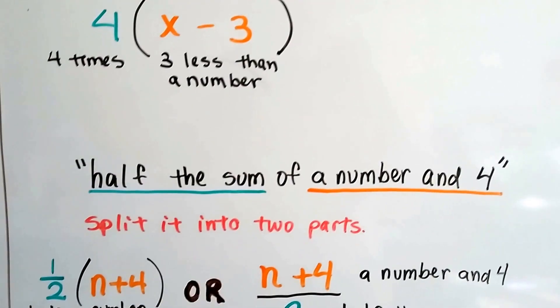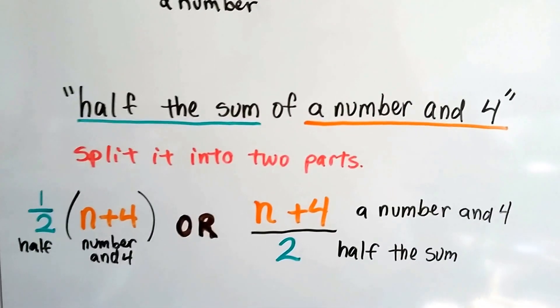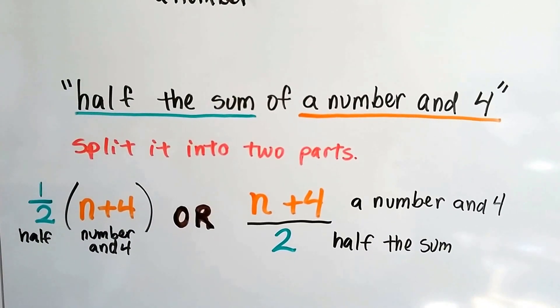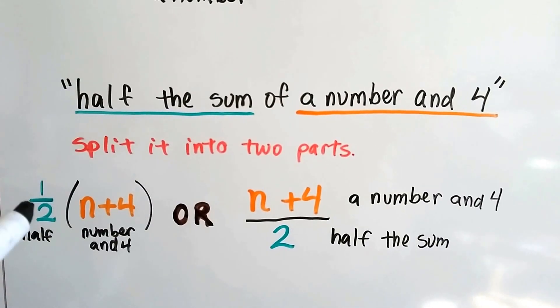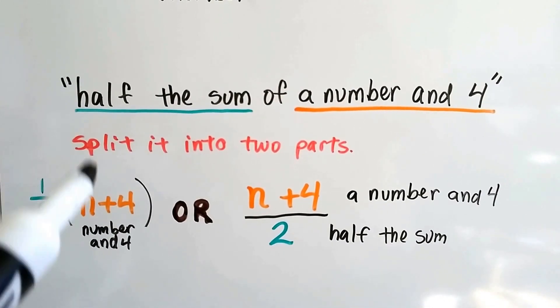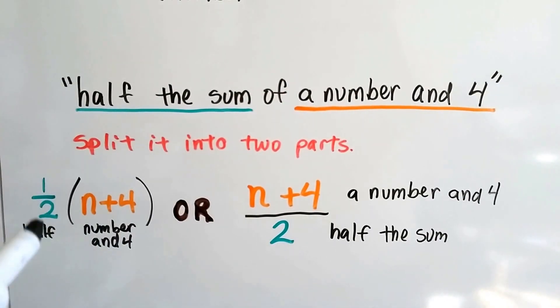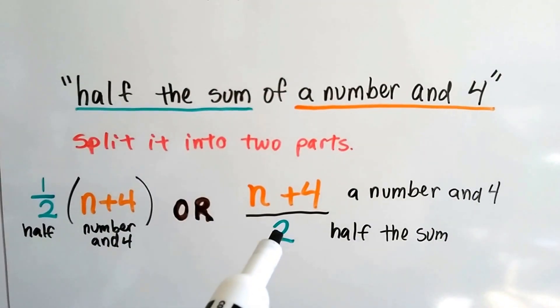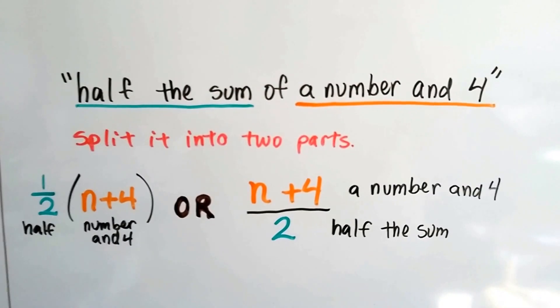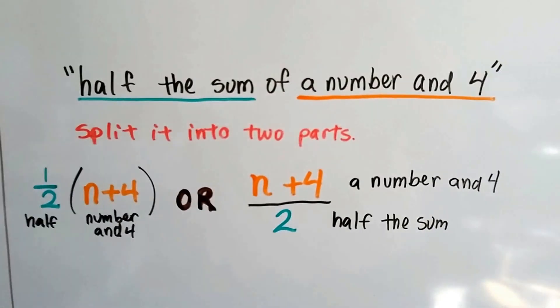All right, let's look at this one. Now we've got half the sum of a number and four. Half the sum of the number and four could be a half on the outside of parentheses, and the number plus four, so we multiply them. Or we could do the number plus four and divide it by two, like this, and get half of it. Either way.